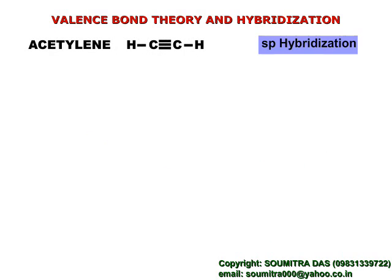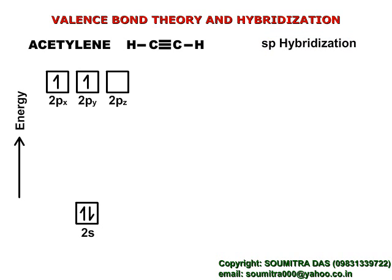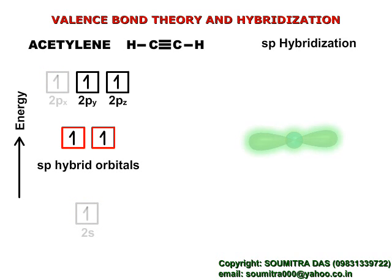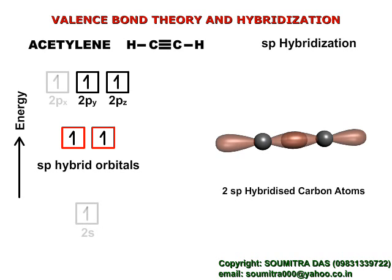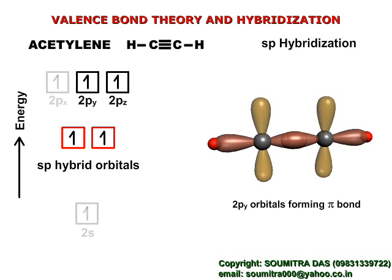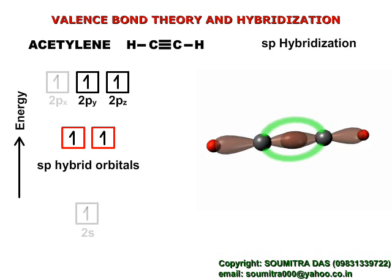In acetylene there is sp hybridization. Here, once again one electron is promoted to the 2p level. Out of these four half-filled orbitals, one bonds with a hydrogen atom and another with the other carbon atom. Therefore, these two orbitals hybridize to form two sp hybrid orbitals, which are linear in shape. The p orbitals that don't take part in hybridization are involved in pi bonding like this.